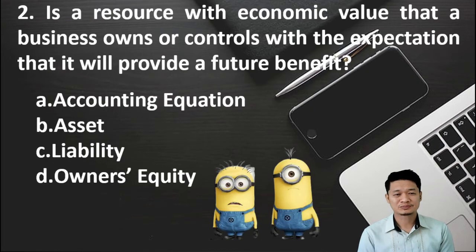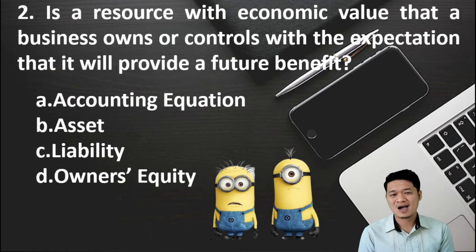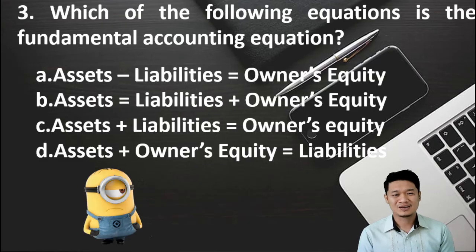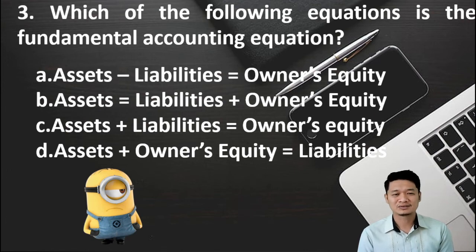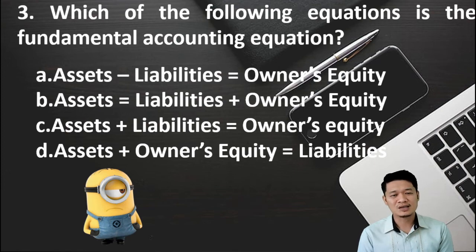Part number 2: Is a resource with economic value that a business owns or controls with the expectation that it will provide a future benefit. Is it letter A, accounting equation? Letter B, asset? Letter C, liability? Or letter D, owner's equity? For number 3: Which of the following equations is the fundamental accounting equation? Letter A, assets minus liabilities equals owner's equity. Letter B, assets equals liabilities plus owner's equity. Letter C, assets plus liabilities equals owner's equity. Letter D, assets plus owner's equity equals liabilities.